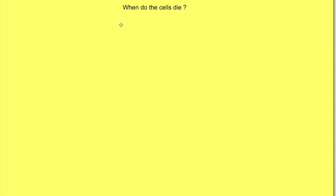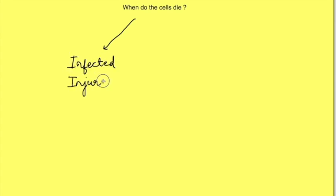In this video, we are going to discuss when the cells can die and how they die. They can die either when they become badly damaged — like when they get infected, injured, or even poisoned — or they can die more of a natural death where the death is important for the normal functioning of the body.